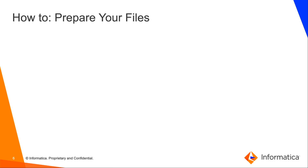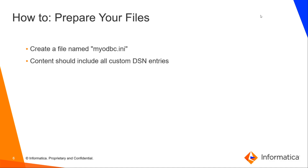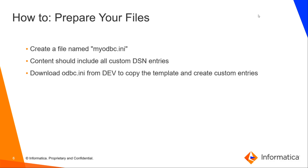The first step is to create a file named myodbc.ini. It should only contain your custom DSN entries, so it will not look exactly like the odbc.ini file itself. To get started with creating your custom DSN entries, you can download odbc.ini from the dev server. In that file, you will see templates that can be used to create a DSN for the given server type.